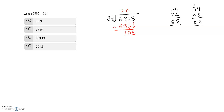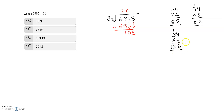I try 34 times 4 to see if it's greater or smaller than 105. 4 times 4 is 16 — 6 goes here, carry 1. 4 times 3 is 12 plus 1 is 13. So 34 times 4 is 136, which is greater than 105.